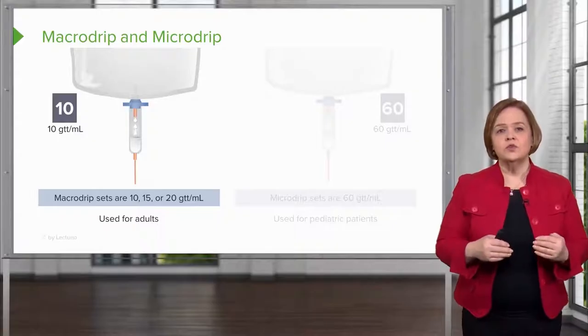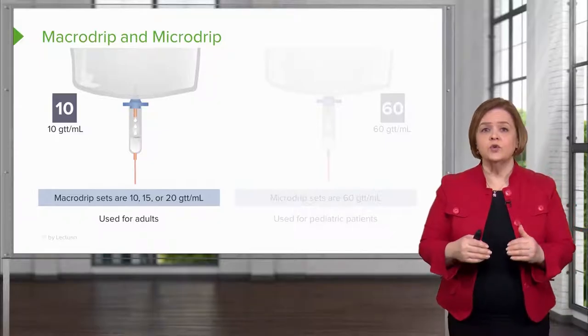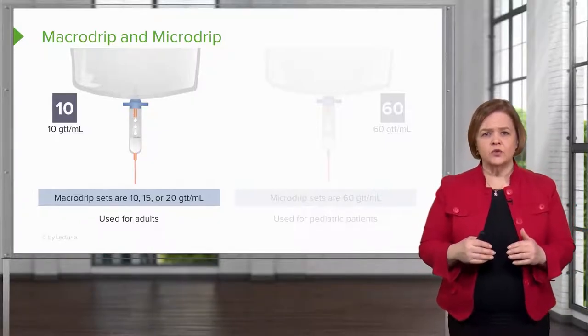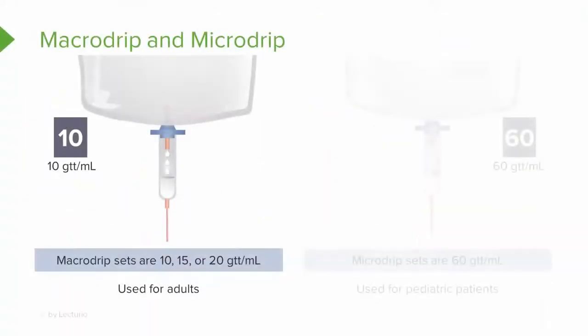You have macro drip tubing and micro drip tubing. We use macro drip tubing with adults. Look at that box right there with the number 10 in it — it means it takes 10 drops in this particular tubing to make one milliliter. That's the drop factor of the tubing: 10 drops to make one milliliter.